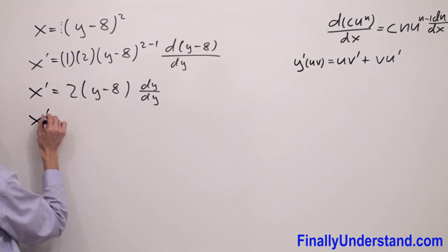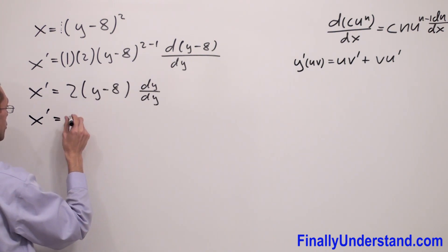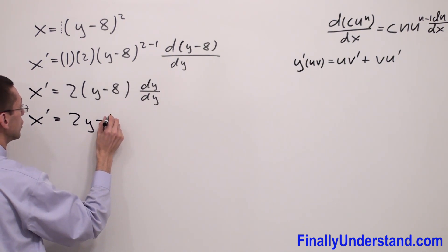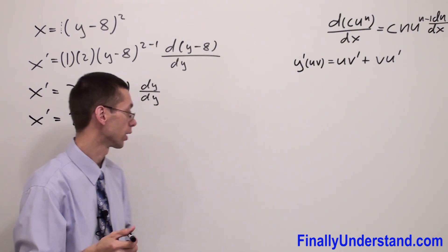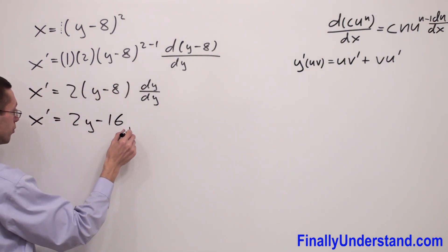So x', the derivative of my function, is equal to—I'm going to distribute this 2 into the parentheses—I have 2y minus 16. dy over dy is equal to 1. That's why I'm not going to write it. And this is my solution for this problem.